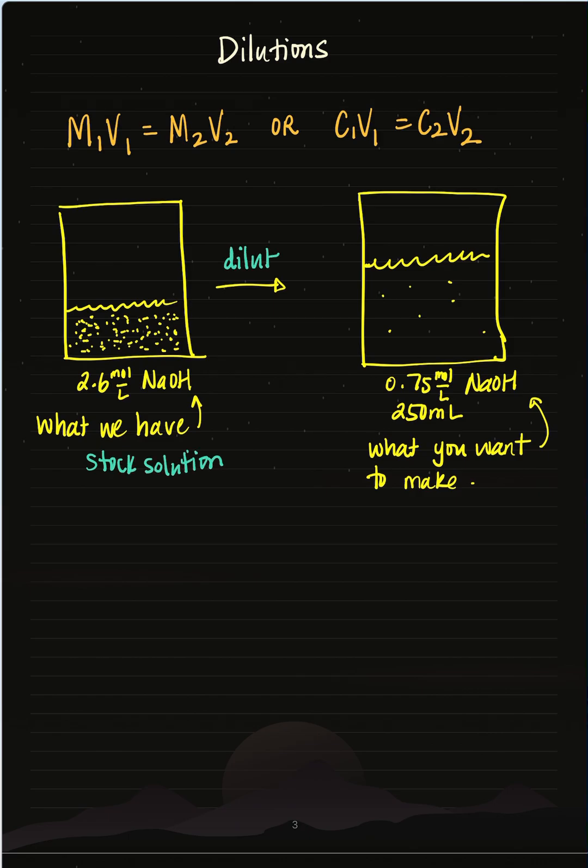So I want to dilute this and I want to bring its concentration down to 0.75 moles per liter and I want to make 250 ml. So this is what I want to make.